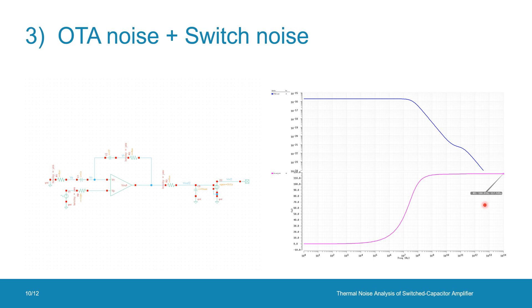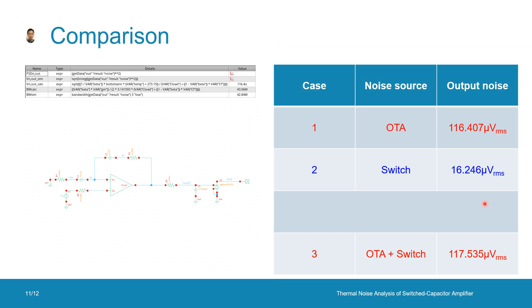Case number three: both OTA noise and switch noise are enabled. The total output noise voltage is 117.53 µV. Summarizing: 116 µV for OTA only, 16 µV for switch only, and 117 µV for both. Once again the switch noise is really negligible compared to the OTA — this is the simple truth of noise analysis in a switched-cap amplifier. The total output noise power as the summation of the two verifies the superposition principle.